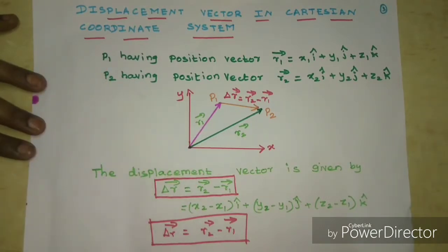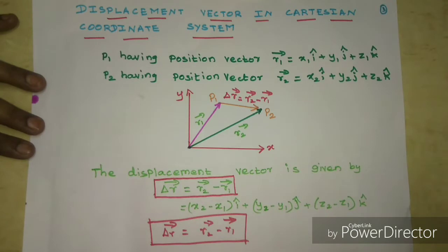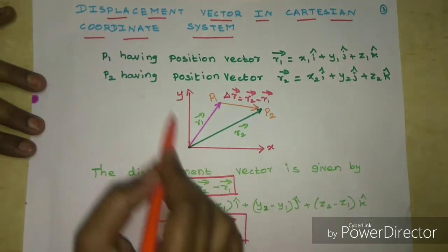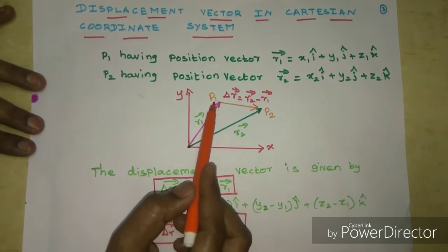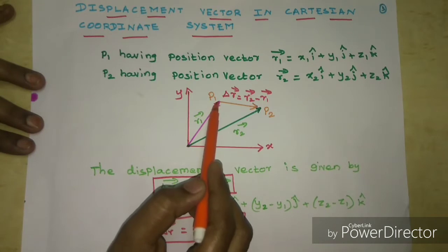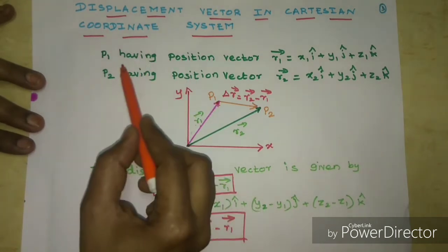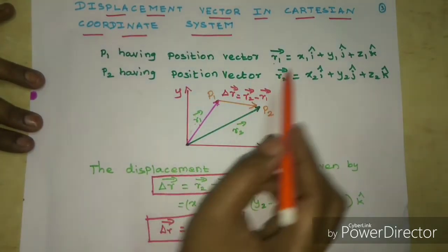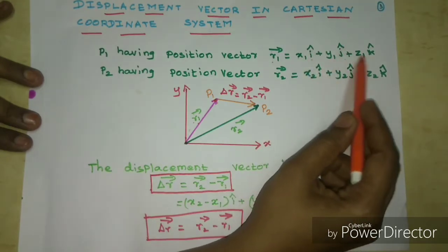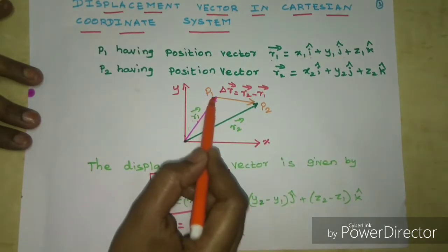Now let's look at displacement vector in a Cartesian coordinate system. In previous videos we discussed how to note the position vector and its magnitude. We will work in three dimensions. Consider a particle at position P1 with position vector R1, given by x1 i-cap plus y1 j-cap plus z1 k-cap.